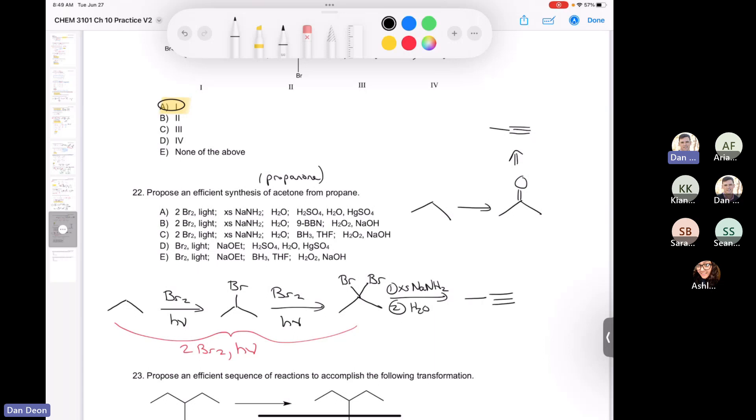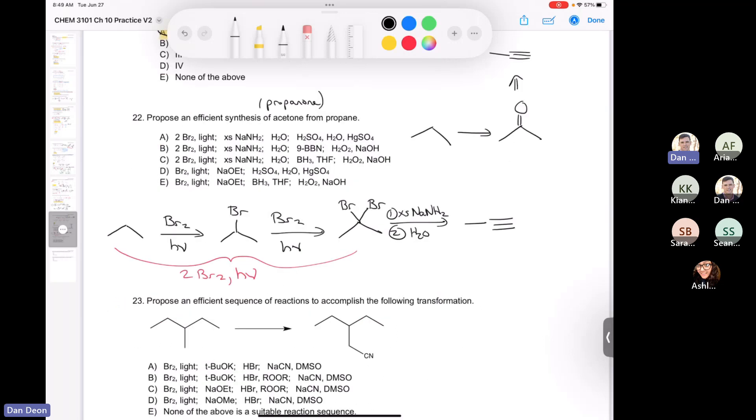And that is going to do the double elimination and give us propyne. And then we have to do a Markovnikov addition of water across that. And so if you remember, when you want to do the Markovnikov addition of water across the triple bond, you've got to use sulfuric acid water, but you also have to use mercuric sulfate HgSO4.